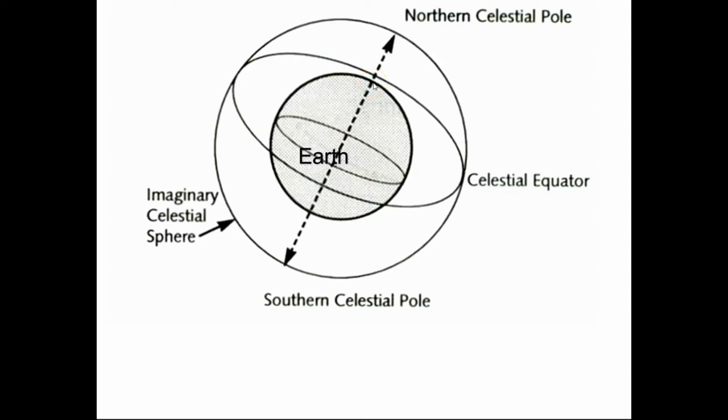Similarly, the Earth has a North Pole, geographic North Pole. We extend that outward and call it the North Celestial Pole. The South Pole of the geographic Earth, we represent and extend outward and call that the South Celestial Pole or Southern Celestial Pole.